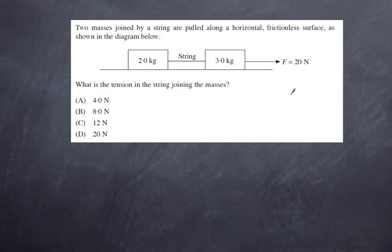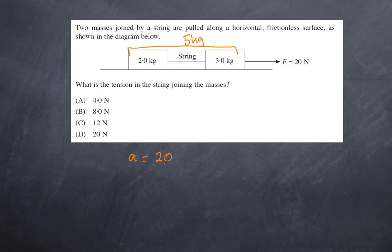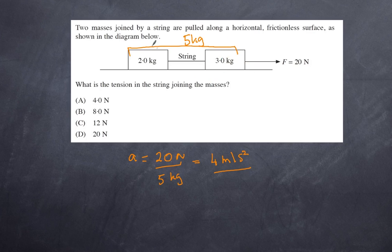Two masses are joined by a string and pulled along a horizontal frictionless surface and you have to work out the tension. This is an application of Newton's second law. The best approach is to treat the two kilogram block and three kilogram block as a single system of five kilograms. The only force acting on the system is the 20 newton force. Therefore the acceleration of the system equals 20 newtons divided by five kilograms, giving four meters per second squared.